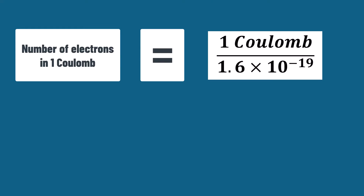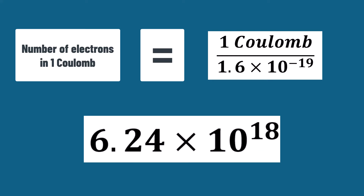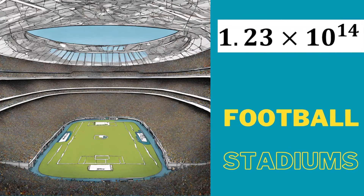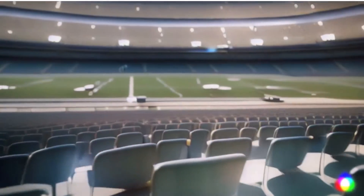So how big is 1 Coulomb of charge? Let's begin by considering how many electrons make up 1 Coulomb of charge. To do this, we'll take 1 Coulomb and divide it by the charge on each electron — 1.6 times 10 to the power negative 19 — and this gives us about 6 quintillion electrons. To put this into perspective, this is equivalent to 1.23 times 10 to the power 14 football stadiums filled with electrons, assuming each stadium has 50,000 seats and each electron is seated in its own chair.